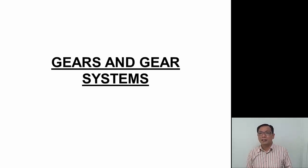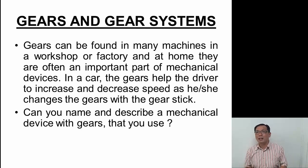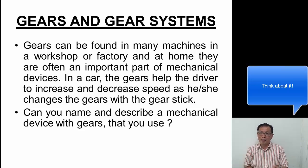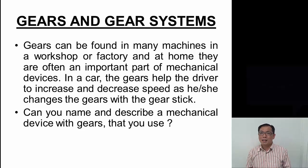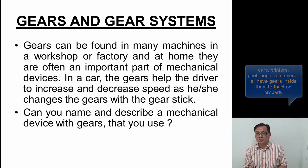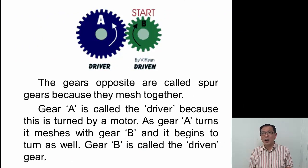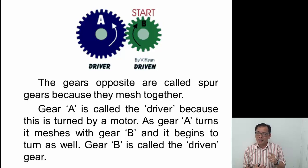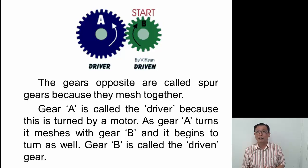Gears and gear systems can be found almost everywhere — in workshops, factories, and mechanical devices. Examples include cameras, cars, and photocopying machines which have many gears inside. The two gears you see here are called spur gears because they mesh together. Gear A is called the driver because it is turned by a motor. As gear A turns, it meshes with gear B — gear B is called the driven gear. Note that gear A turns anti-clockwise and therefore gear B turns clockwise.